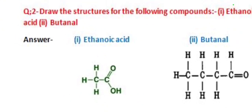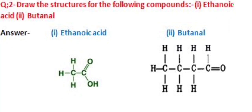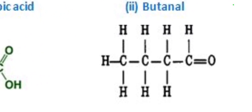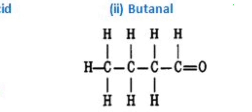Now we come to the structure of butanol. The first carbon shares its three bonds with hydrogen atoms and one bond with another carbon. The second carbon shares two bonds with hydrogen atoms, one bond with the previous carbon atom, and one bond with the next carbon atom. The third carbon atom shares two bonds with two hydrogen atoms, one bond with the previous carbon atom, and one bond with the next carbon atom. The fourth carbon atom shares two bonds with oxygen, one bond with hydrogen, and one bond with the previous carbon atom. This is the structure of butanol.